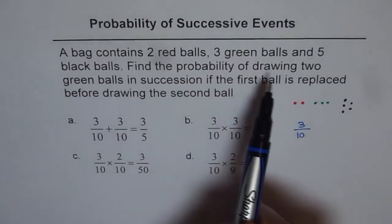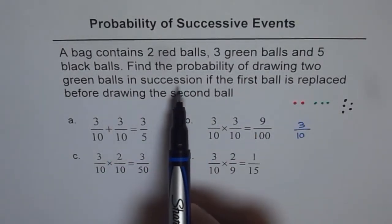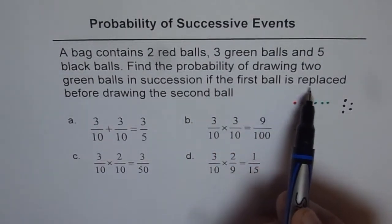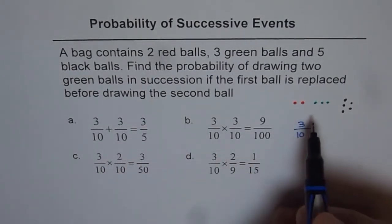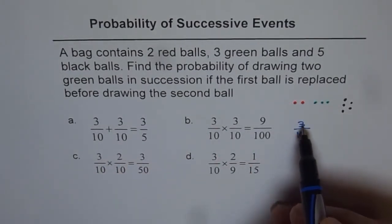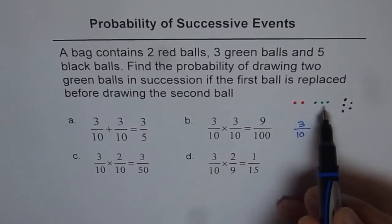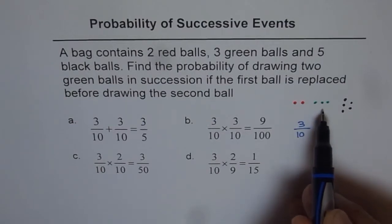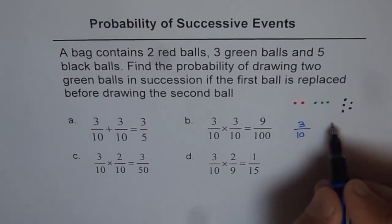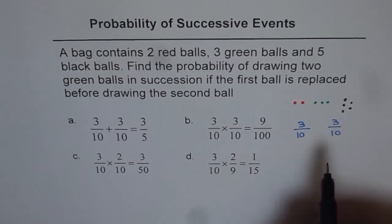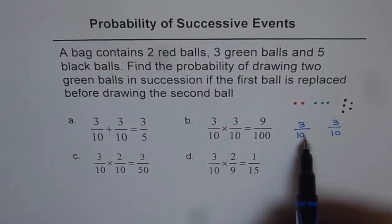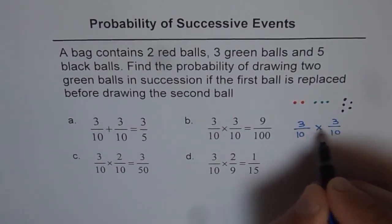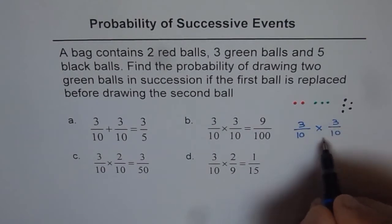Drawing two green balls in succession means one after another, and the first ball is replaced before drawing the second ball. So the probability of drawing the first green ball is three out of ten. We replace the ball and put it back, so again we have ten balls. The probability of drawing the green ball again is three out of ten. The probability of drawing two green balls in succession is their product, so we multiply them to get nine out of one hundred.